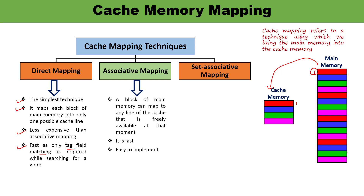The second is associative mapping. In the case of associative mapping, any block of main memory can be copied to any line of cache memory if that line is available at that moment. A block can map to any freely available line of the cache. This is relatively faster and easy to implement.